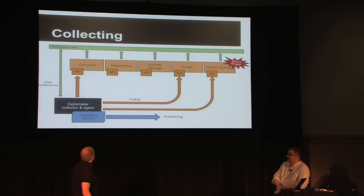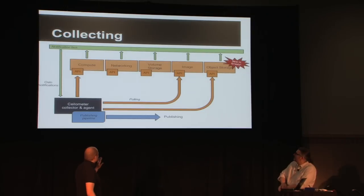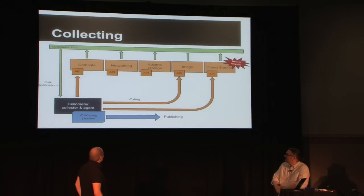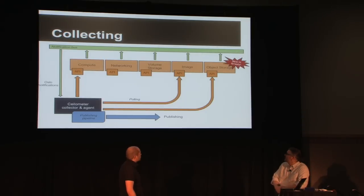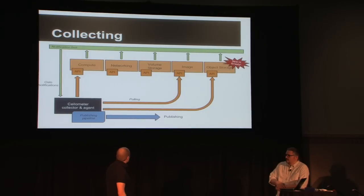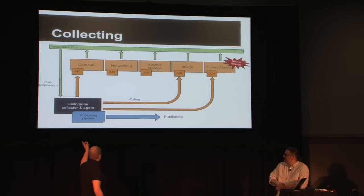This is mainly how we do the collection of metrics — this is accurate to about 99%. There are two ways to collect data. The green one, and the best one, is via the notification bus, which is part of Oslo. We also have the API, which is used by the agents in Ceilometer to collect data we don't have on the notification bus. For example, if you want to meter Glance, you can't know how many images a tenant has without asking the API, so you have to poll regularly. Everything is collected by two components: the collector and the agents.